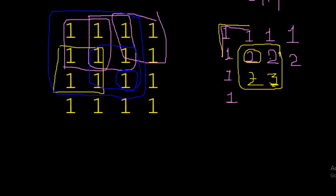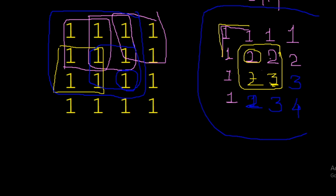For one element the value becomes three, and we can visualize this as three overlapping squares of sizes one, two, and three. Completing the matrix, the values become three, two, three, and four for the remaining elements. The total number of squares is the sum of all values in the final array.